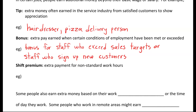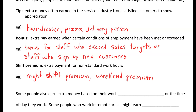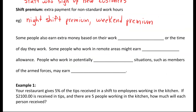The last example we're going to look at is shift premiums — extra payment for non-standard work hours. For example, a night shift premium or a weekend premium. Often it's times when people don't want to work those hours, so the incentive is that they're going to be getting a shift premium. Some people also earn extra money based on their work environment or the time of day they work.